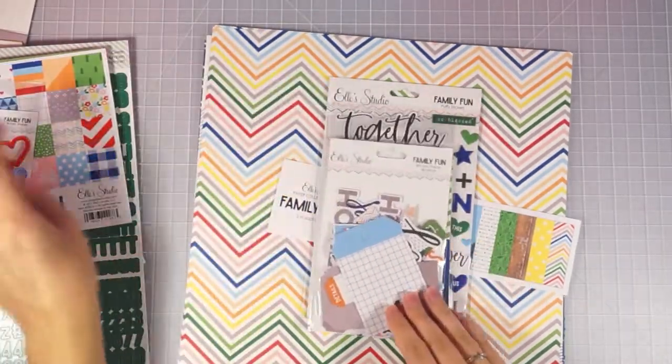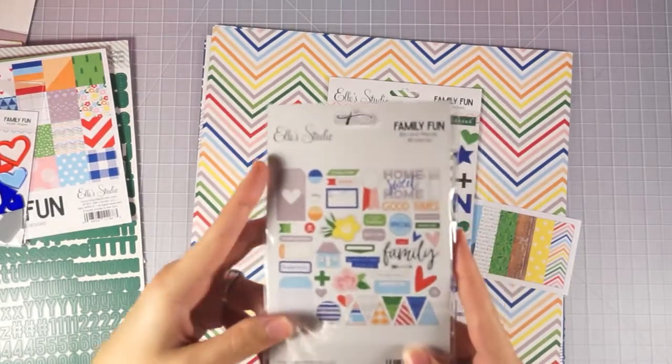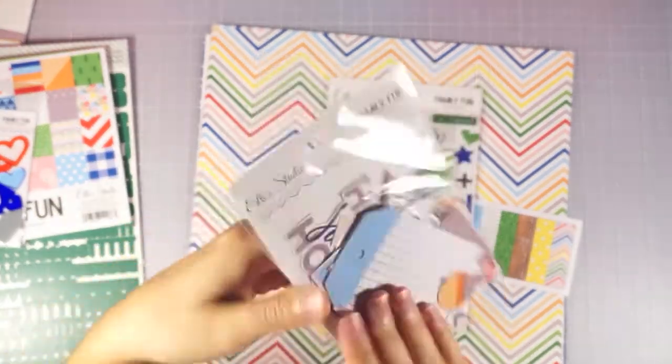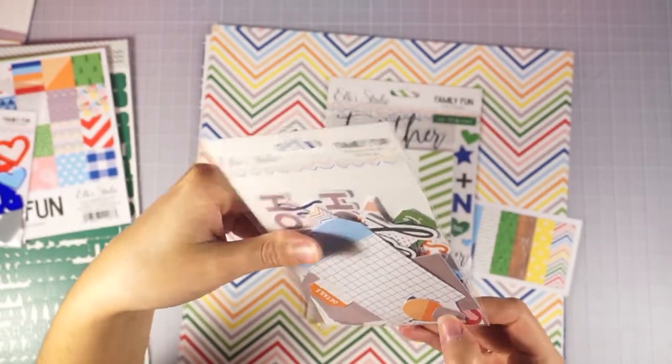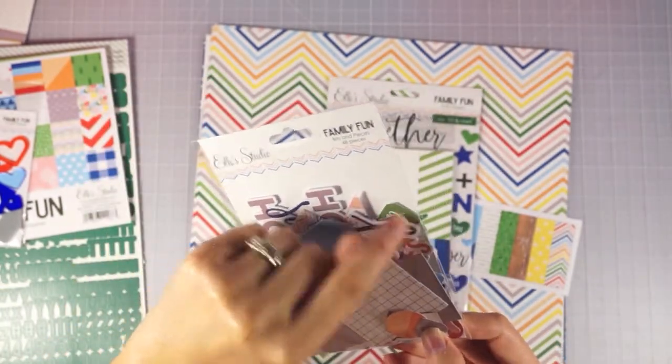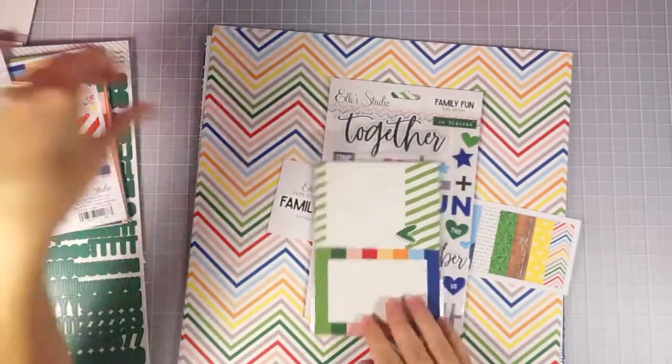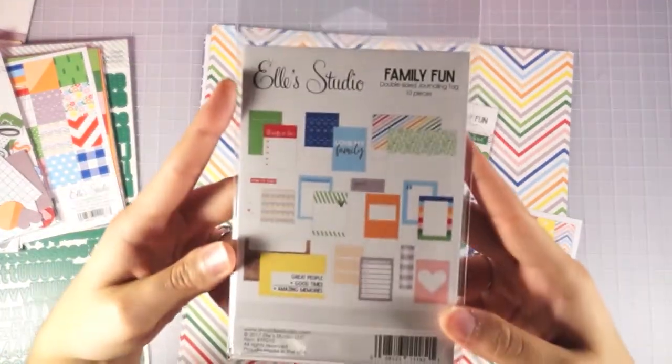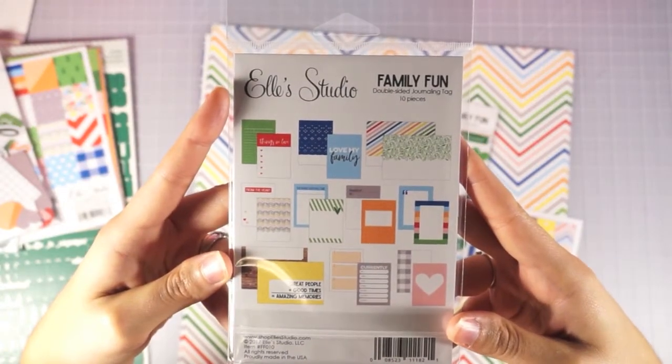I got another pack of the acrylics and then the die cut sheet. I won't take these out but I'll show you guys on the back here. I do like that these are already poked out. They do have tabs. I see some tabs on them. So just have to trim those off. And then here are the journaling tags. I don't have to take these out because they're also on the back.